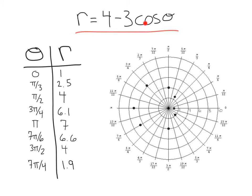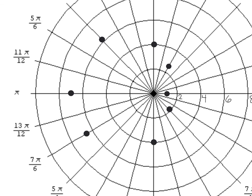Moving on: r equals 4 minus 3 cosine theta. I've gone ahead and filled out this table with a variety of points and plotted those points. Notice this time I used some π/3, some 3π/4, 7π/6. The more variety you can have, the easier it's going to be to tell what shape you're dealing with, especially if you aren't familiar with the different patterns of polar equations. Let's zoom in on our graph.